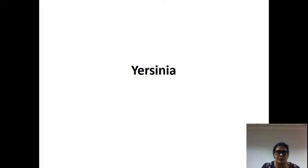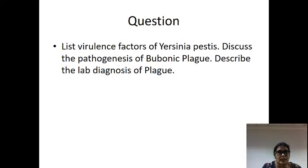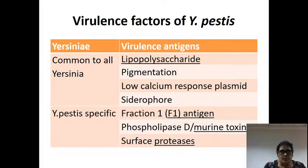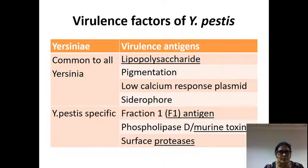That is about Rickettsia. Coming to the next topic: Yersinia. Yersinia was not expected as an essay question, but it was given. The assay asked: list the virulence factors of Yersinia, describe the pathogenesis of bubonic plague. So we have to write about virulence factors, pathogenesis, and lab diagnosis. Yersinia pestis is the species which causes plague — it is the only one that causes plague.